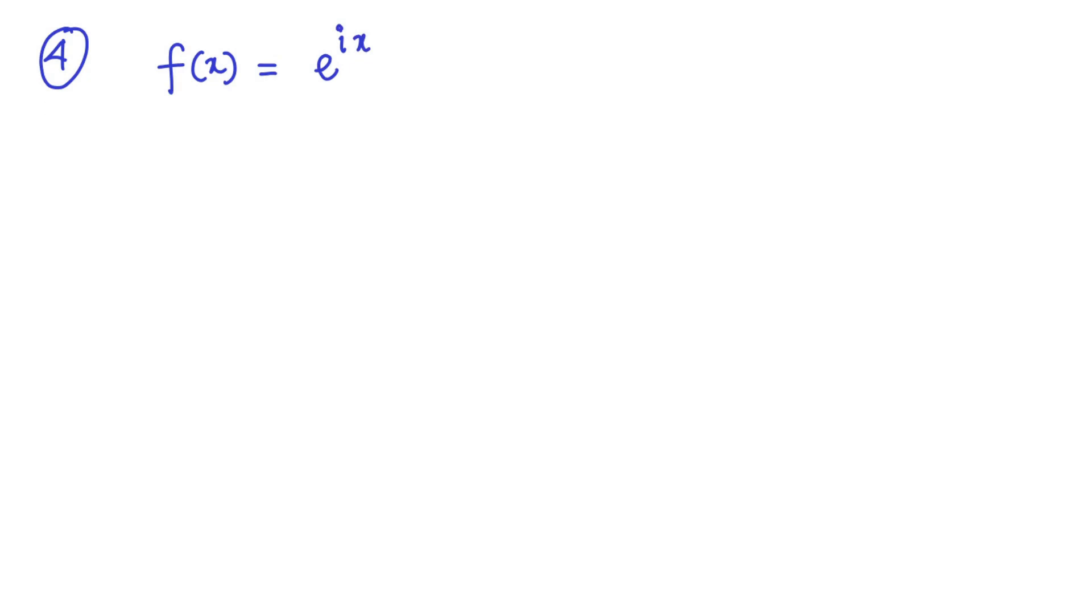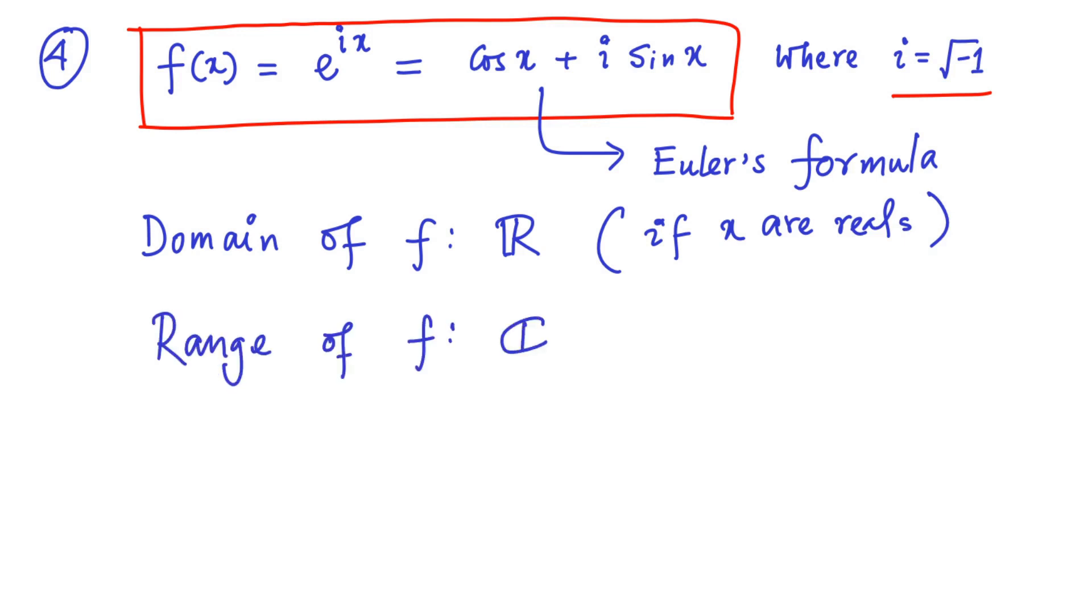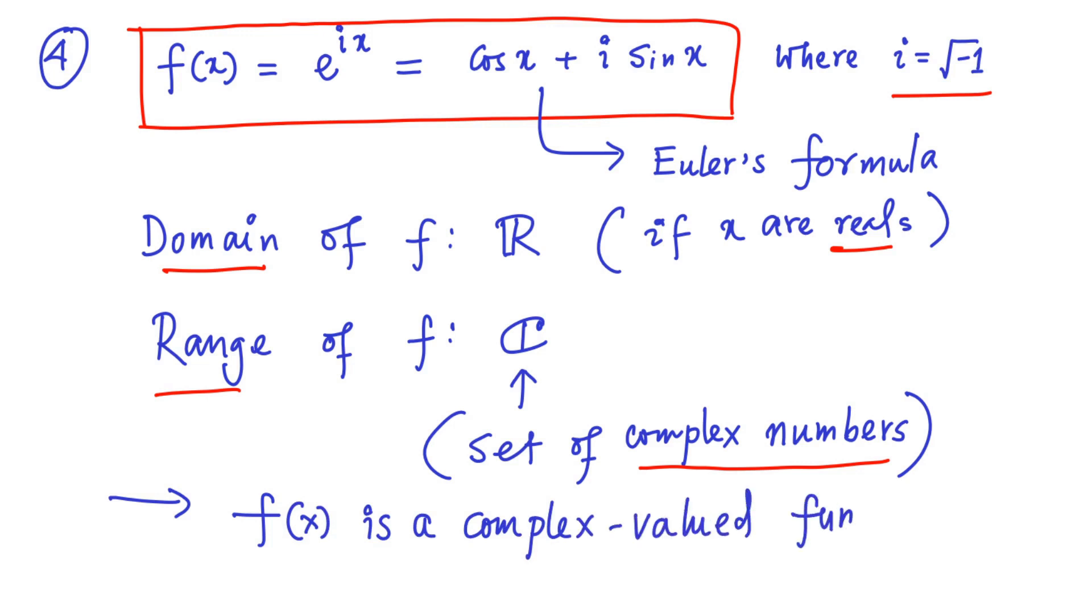Let me consider another example. F of X equal to e to the power IX. Using Euler's formula, you can also write it as cosine X plus I sine X, where I is the imaginary number given by square root of minus 1. Now here, domain of the function F can be taken to be set of real numbers as given here. On the other hand, the range of the function F is a set of complex numbers. And this is an example where F of X is a complex valued function over real numbers.